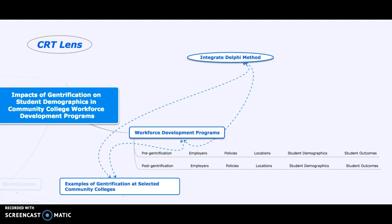The different aspects of both states will be further developed through evaluating the employers, the policies, the locations, the student demographics, and the student outcomes during the pre-gentrification and post-gentrification states. By locations, I mean the locations of the workforce development programs, both pre- and post-gentrification within the service areas of the selected community colleges.